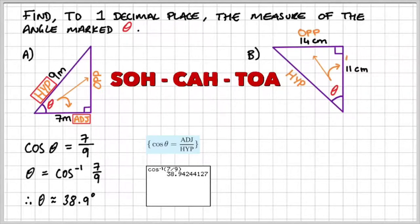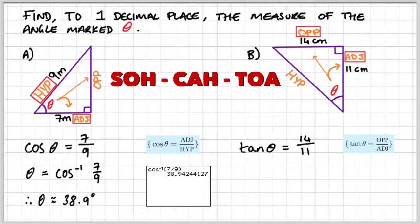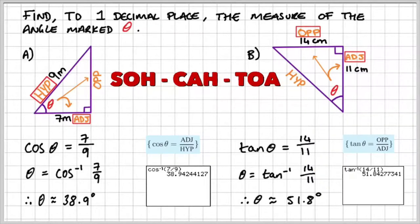For part B, I have the hypotenuse, the opposite and the adjacent. I know I'm going to be using the opposite and the adjacent, so in this case, I'm going to be using the tan ratio. So tan theta is equal to 14 over 11, and theta is equal to the inverse of tan, 14 over 11. So if I do that on my calculator, I get theta is equal to approximately 51.8 degrees.